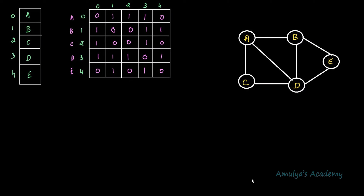In the unweighted undirected graph and in the unweighted directed graph, we store 0 if there is no edge between the vertices, and we store 1 if there is an edge between two vertices. In the weighted graph, instead of storing 1 we store the weight of that edge. But if our graph contains multiple edges — for example between A and B there are two edges, or three edges — how do we represent this using adjacency matrix representation?